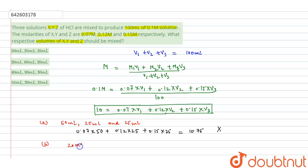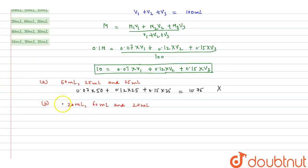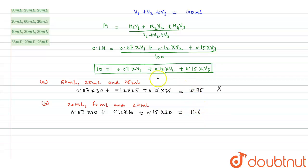For option B, V1=20 mL, V2=60 mL, V3=20 mL: 0.07×20 + 0.12×60 + 0.15×20 = 11.6. This is also not equal to 10, so option B is also incorrect.